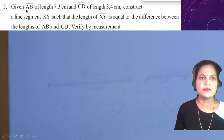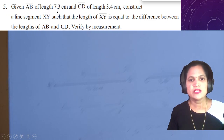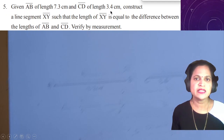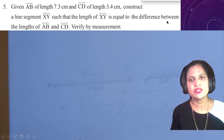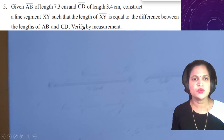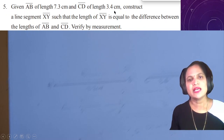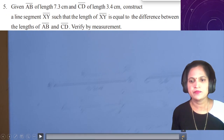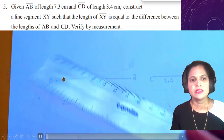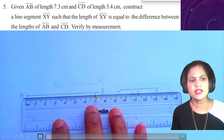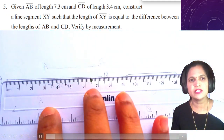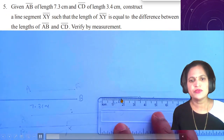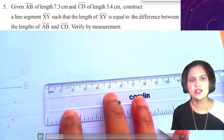Fifth question: given AB of length 7.3 cm and CD of length 3.4 cm, construct a line segment XY such that the length of XY equals the difference between the length of AB and the length of CD, then verify by measurement. AB minus CD: you can calculate it, but you have to show this geometrically. AB is 7.3 cm and CD is 3.4 cm — these two lines are given.